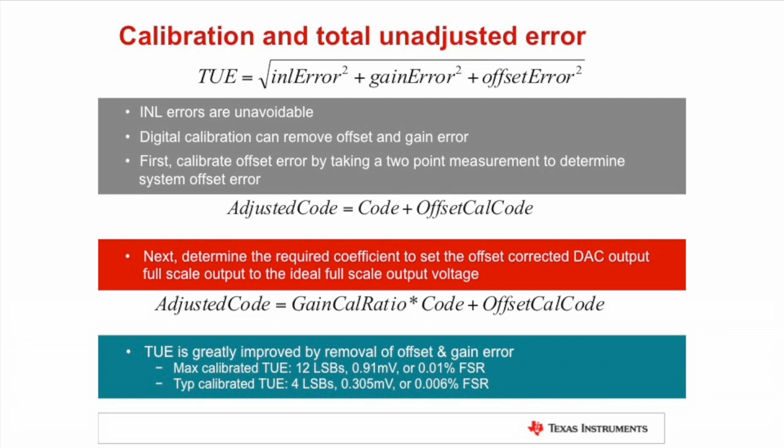INL errors are primarily related to the resistor mismatches in the DAC ladder or DAC strain itself. Since these are internal to the device, there is little we can do to calibrate them out of the system, but it is very easy to apply digital techniques to correct the offset and gain error of a DAC. The DAC 8718 even features this correction engine on silicon.